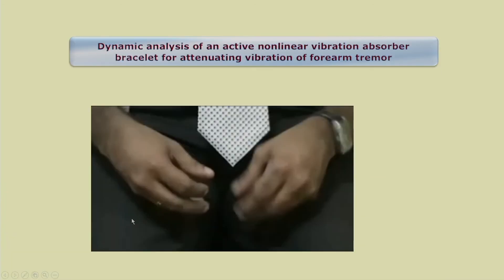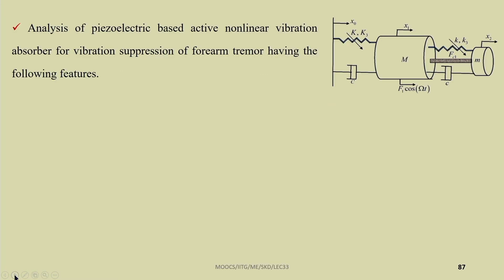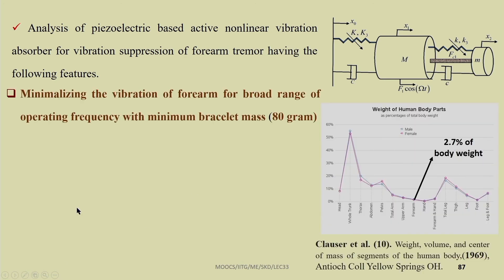One can take velocity, displacement, and acceleration feedback. Sometimes one can observe tremor in the hand. To control the tremor in the hand, one can put a band on the forearm — as we know, by adding a mass to a vibrating system we can suppress vibration by shifting the natural frequency. Resonance occurs when the excitation is near the natural frequency. By adding additional mass and spring, we shift the natural frequency, thereby reducing the vibration.